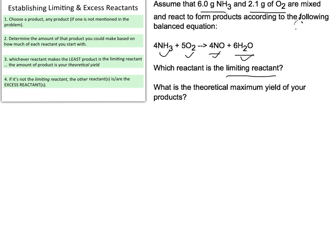In order to figure out which reactant is the limiting reactant, we must figure out which one limits the amount of one of our products. What we're going to do is first select a product to solve for — I'm going to choose NO. You could have picked H2O; it doesn't really matter. But NO is what we're going to be solving for.